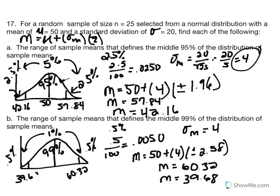We've now identified the range of sample means framing the middle 99% of sample averages: 99% chance that a sample of n equal to 25 will have a sample mean between 39.68 and 60.32.